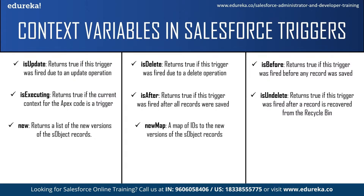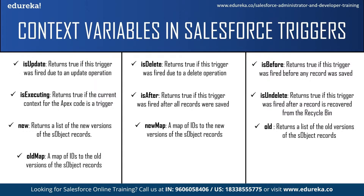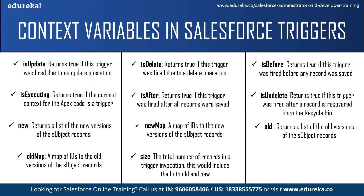Next we have the new context variable — this returns a list of new versions of the Salesforce object records. It is only available in insert, update, and undelete triggers, and records can only be modified in before triggers. After that is newMap — a map of IDs to the new version of the Salesforce object records, only available in before update, after insert, after update, and after undelete triggers. Then old — returns a list of old versions of the Salesforce object records, only available in update and delete triggers. And oldMap — a map of IDs to the old version of the records, also only available in update and delete triggers. Finally, size — returns the total number of records in a trigger invocation, including both old and new.